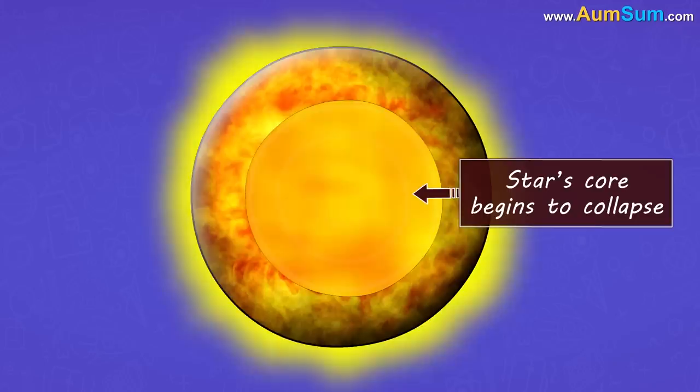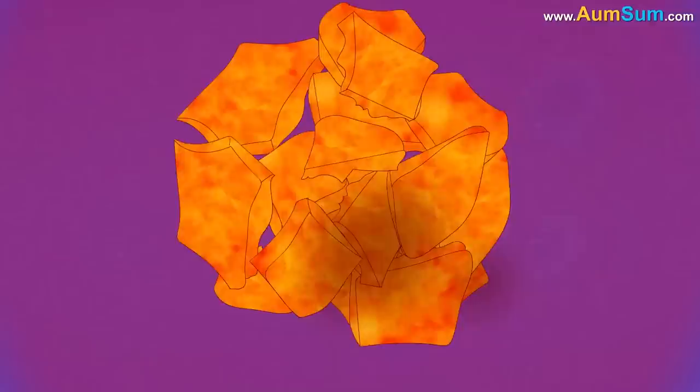The star's core begins to collapse under its own gravity. This collapse causes the outer layers to blow apart in a huge explosion called a supernova.